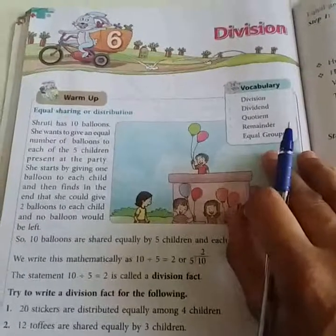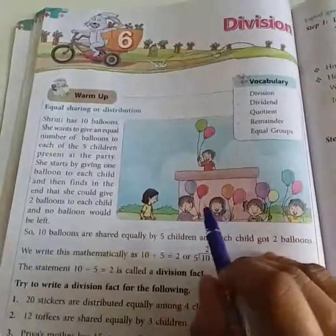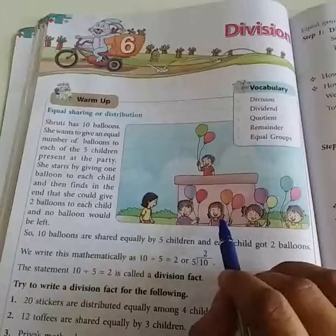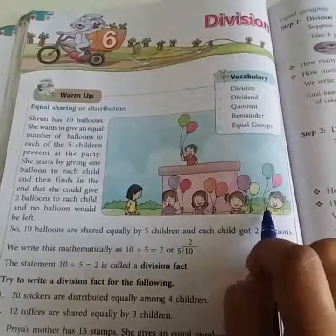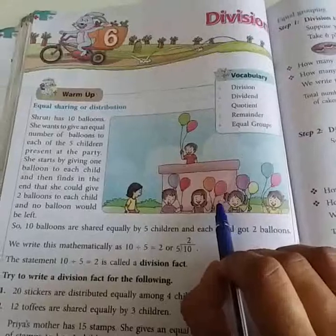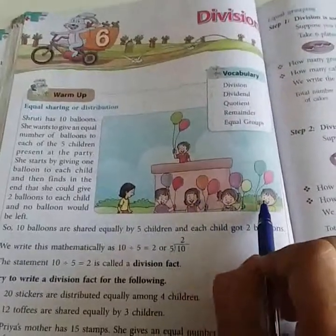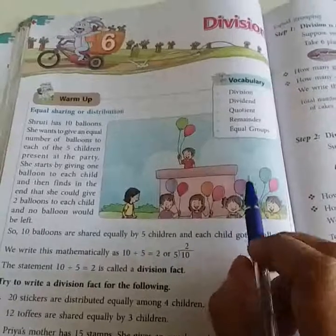Like, if you are having 10 balloons in your hand and 5 kids are also there with you, then how many balloons each kid will get. So, you just start giving 1-1 balloon to each student and then after you will see that you are having still 5 balloons left with you.